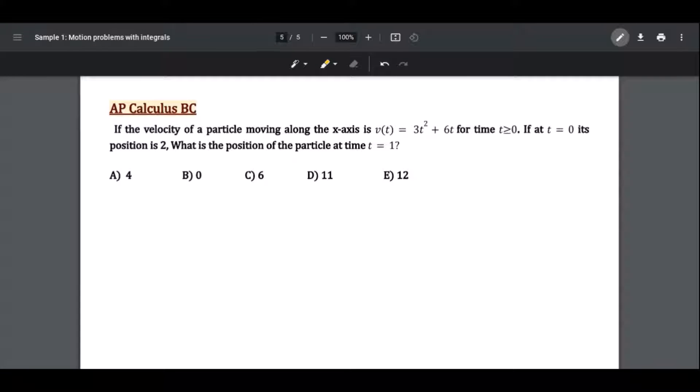If the velocity of a particle moving along the x-axis is v(t) = 3t² + 6t for time t ≥ 0, if at t = 0 its position is 2, what is the position of the particle at time t = 1?